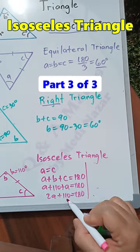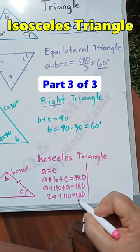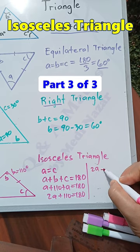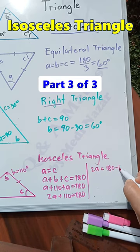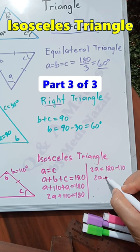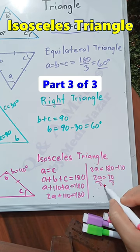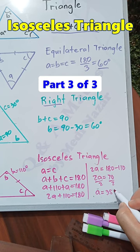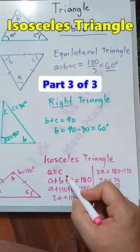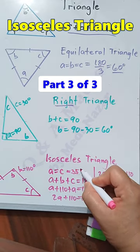Then just subtract 110 from both sides of the equation. We'll have 2A equals 180 minus 110, and we'll have 2A equals 70. Just divide both sides by 2, and we'll have A equals 35 degrees. If A is 35 degrees, C is also 35 degrees.